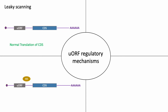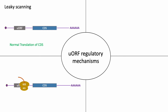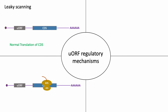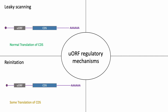If the UORF start codon is recognized by the ribosome and the UORF gets translated, the large 60S subunit will fall off prematurely after finishing UORF peptide synthesis. But the small 40S ribosomal subunit may remain bound to the 5' leader and reinitiate translation at the main start codon of the gene. This is referred to as reinitiation and will lead to some translation of the gene.